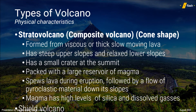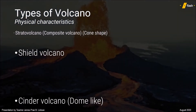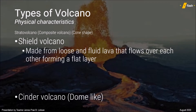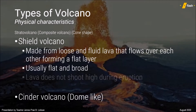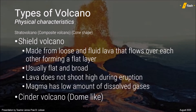Shield volcano, on the other hand, is formed by loose and fluid lava, creating a low and broad slope resembling an armor shield. Since the lava spewed by shield volcanoes is fluid, it runs down its sides, which in turn increases its size. Most of the volcanoes classified as shield volcanoes are found in the islands of Hawaii, such as Kilauea, Mauna Kea, and Mauna Loa.